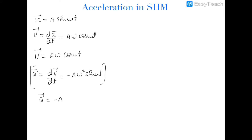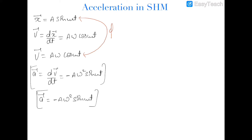So the acceleration of SHM is a equal to minus a omega square sine omega t. The first thing to notice is that when we have assumed the displacement equation as a sine omega t, then the velocity equation comes to be cos omega t, which means there is a phase difference between displacement and velocity, and this phase difference is pi by 2 — velocity leads the displacement by a phase of pi by 2.